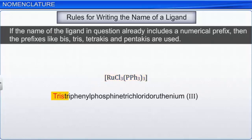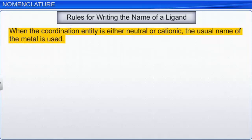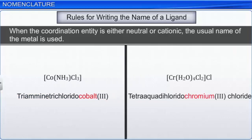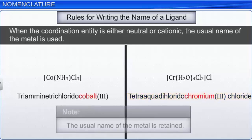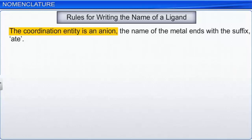When the coordination entity is either neutral or cationic, the usual name of the metal is used. For example, the neutral complex is named triaminetrichloridocobalt(3), and the cationic complex [Cr(H2O)4Cl2]Cl is named tetraaquadichloridochromium(3) chloride. However, when the coordination entity is an anion, the name of the metal ends with the suffix '-ate'. For example, the anionic complex Na[Pt(NH3)3Cl3] is named sodium triaminetrichloridoplatinate(2).